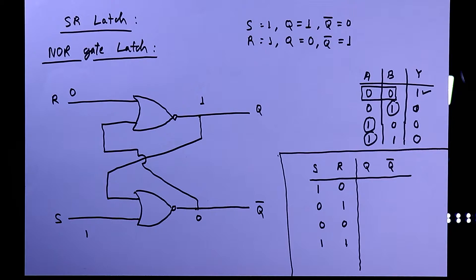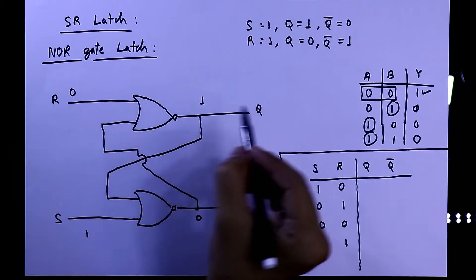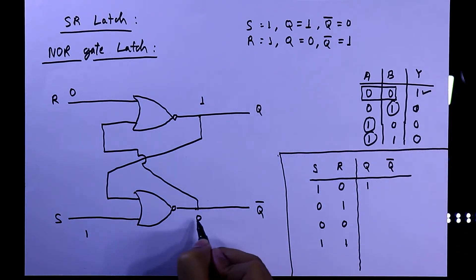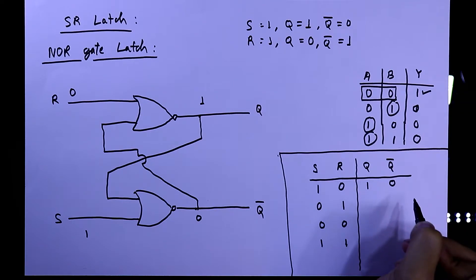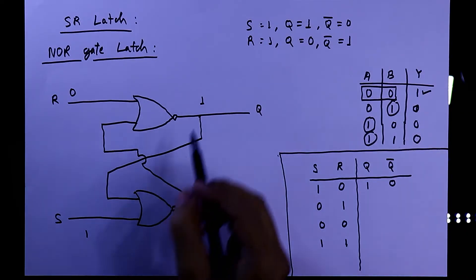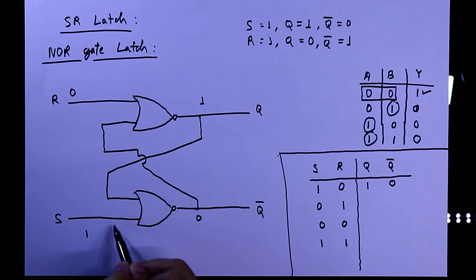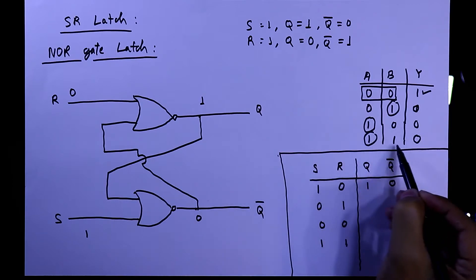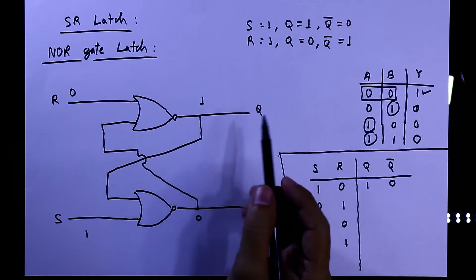So for the first case, S=1 and R=0, we get Q=1 and Q-bar=0. This 1 feeds back into the second NOR gate; with both inputs being 1, the output is 0.